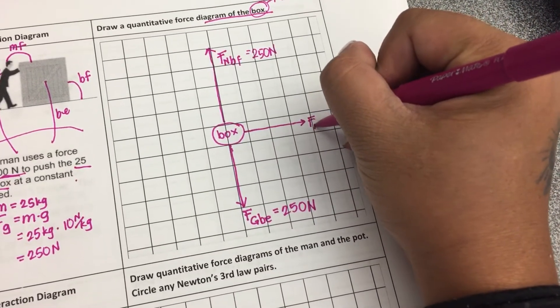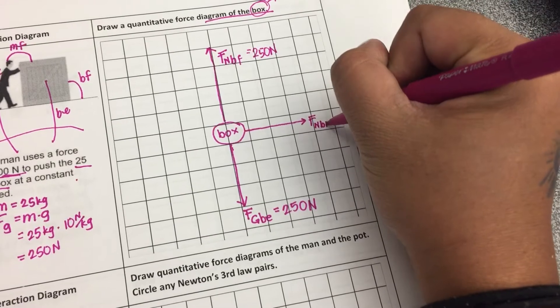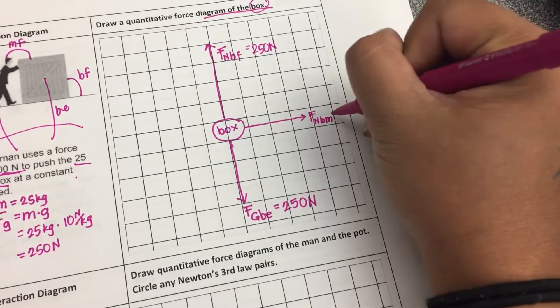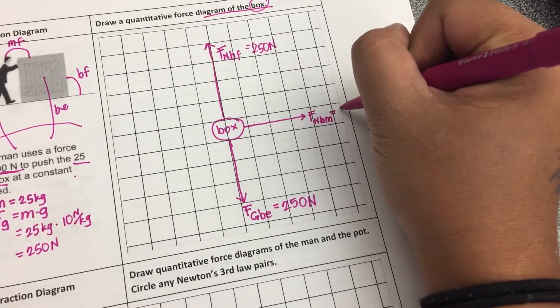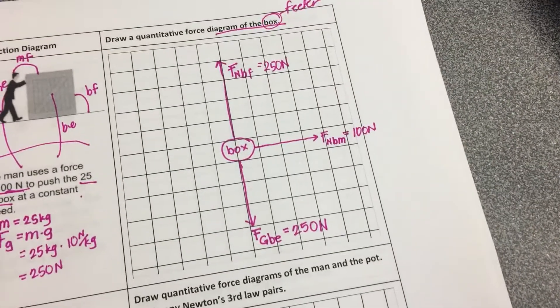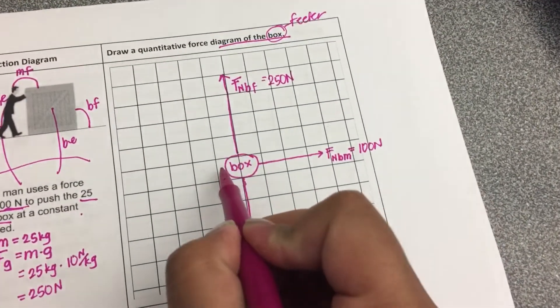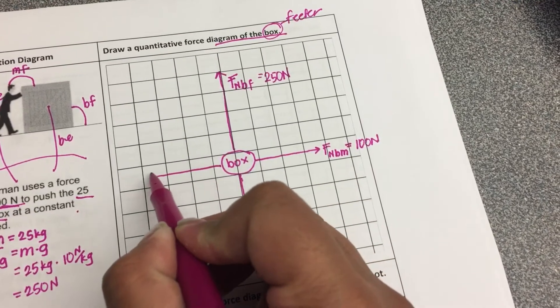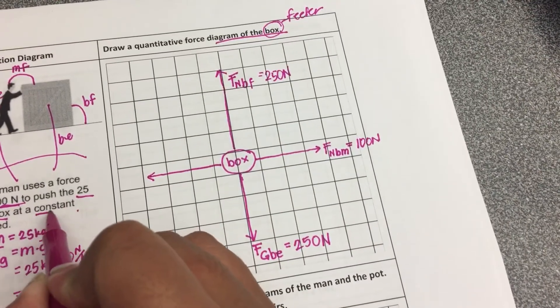So pushed would be a normal force on the box by the man at 100 newtons. And because we are covering balanced forces, we know that there must be something acting, and that also it's a constant speed.